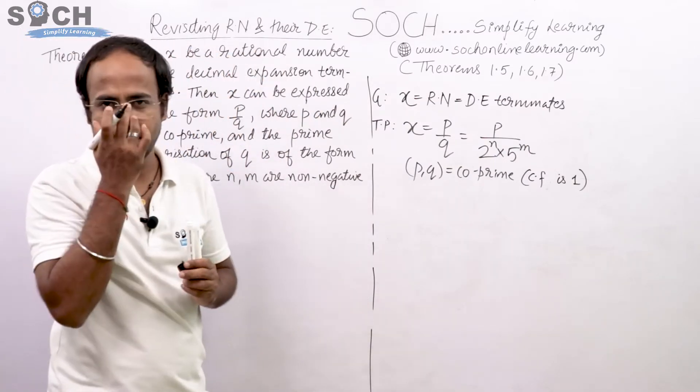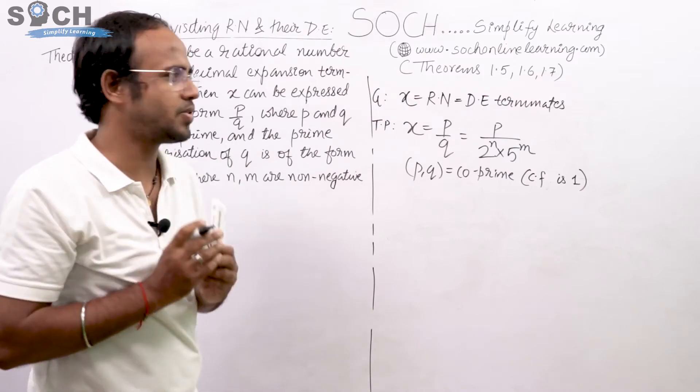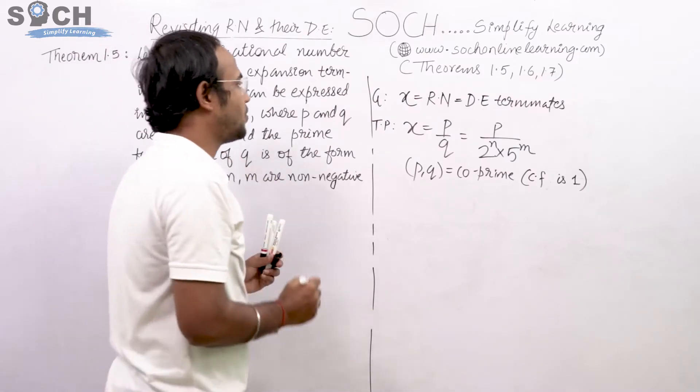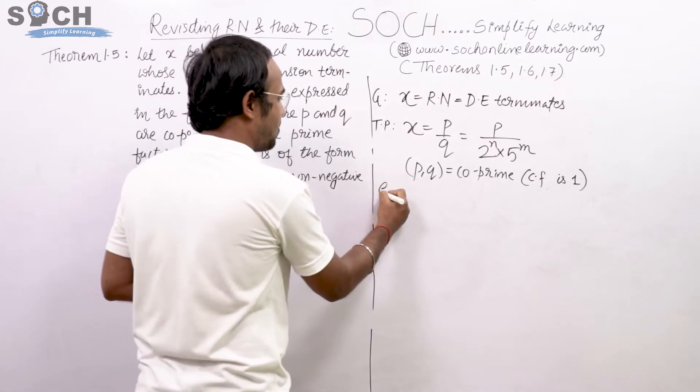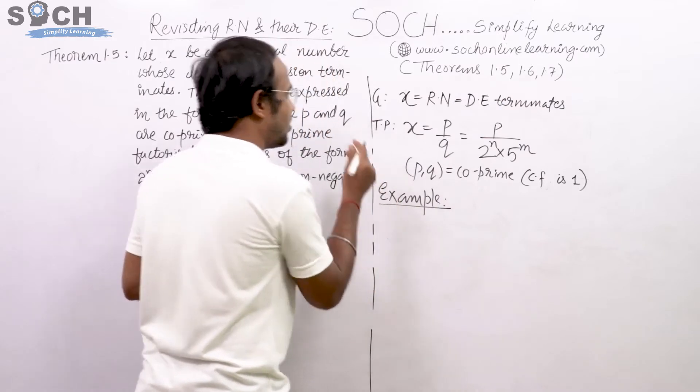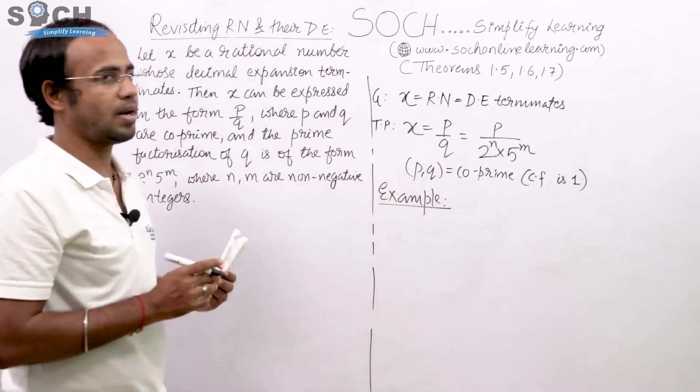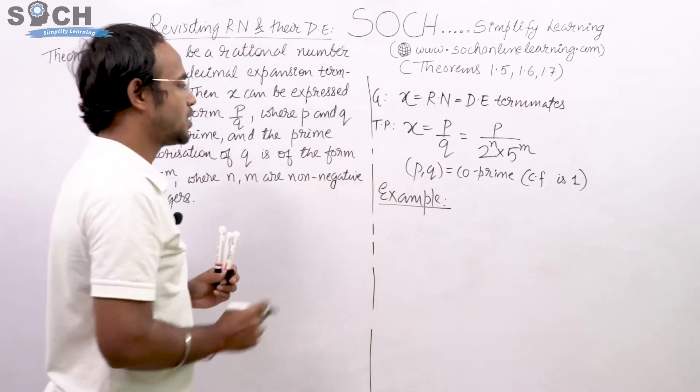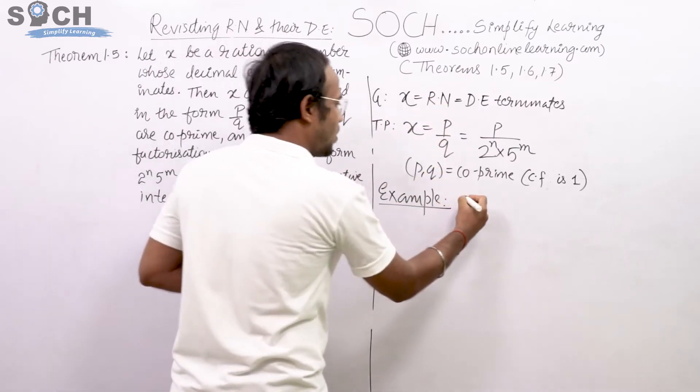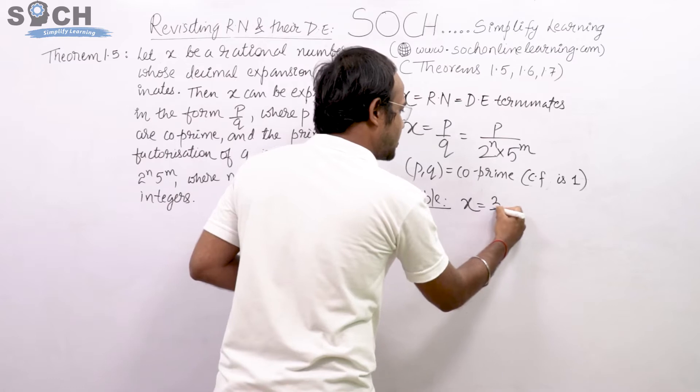If I want to understand this theorem in a very simple manner, what shall I do? The first thing I would do is take an example just to verify. This is not the proof, this is just the verification of this whole theorem so that I remember forever. So X is a rational number, I take 3 by 8.